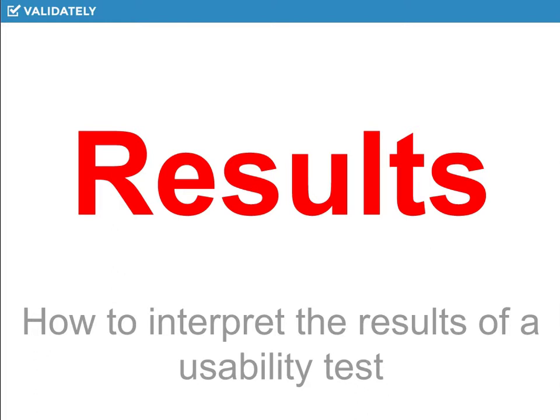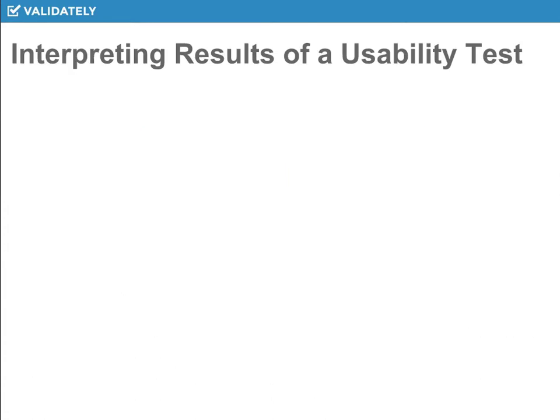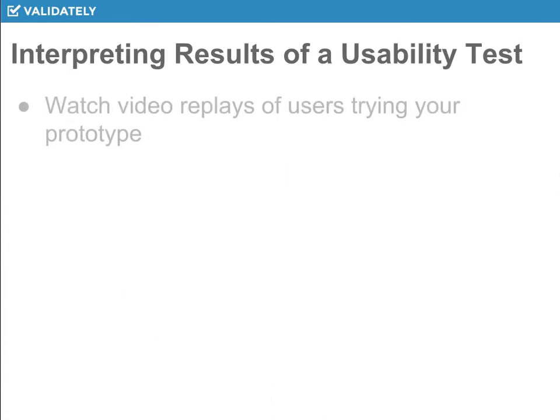Now that you've conducted your usability test, let's talk about how to interpret the results. The first thing you want to make sure you do is whenever you're setting up your usability test, whether it's remote or in-person, whether it's moderated or unmoderated, you always want to record what the test respondent is doing in the prototype.